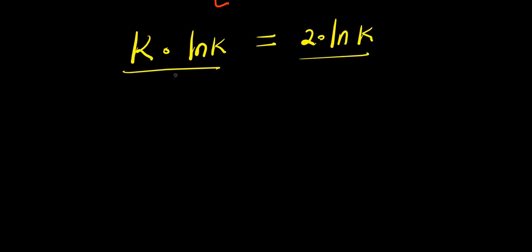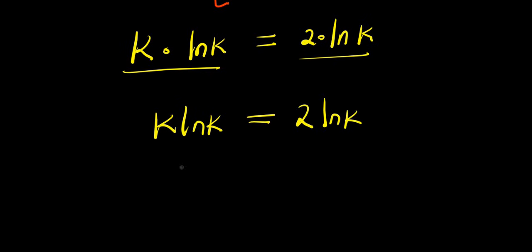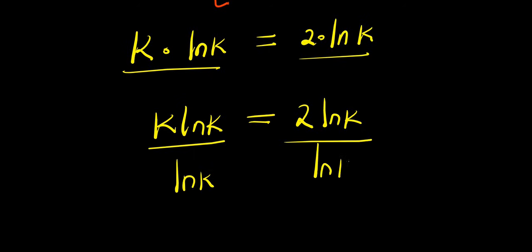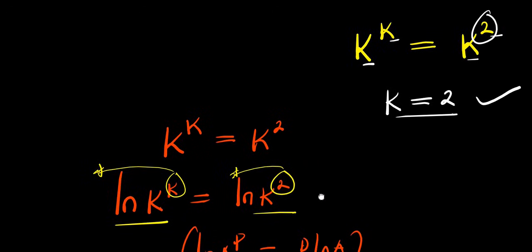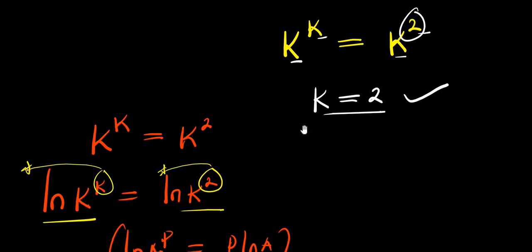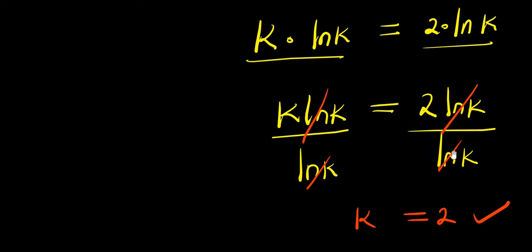So we have k times natural log of k equals 2 times natural log of k. To solve this further, I can divide both sides by natural log of k. The natural log of k terms cancel, and we get k equals 2. This is the same solution we had earlier, so what do we do to get the other solution?